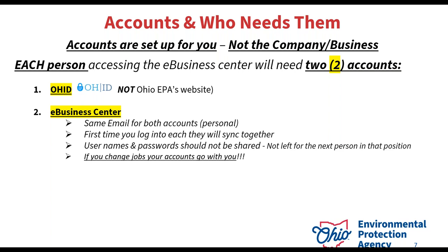That's why these accounts are your own thing, assigned to your electronic signature. Remember that OHID is not EPA's website — it is the state of Ohio's website. Think of it like your phone: unlocking your phone is like getting into OHID, and all the apps on your phone are the different state agencies you can access. The eBusiness Center is one of those apps within OHID, and that's where you create your account to use the eBusiness Center for the EPA. Remember to keep your emails personal — using work emails causes issues when you leave a company, as those emails often get deactivated.